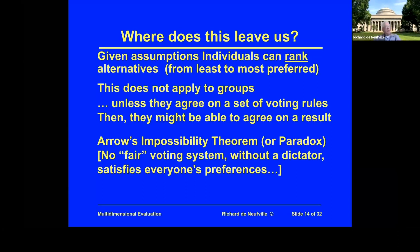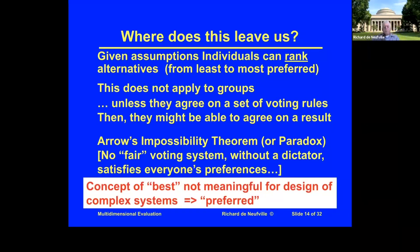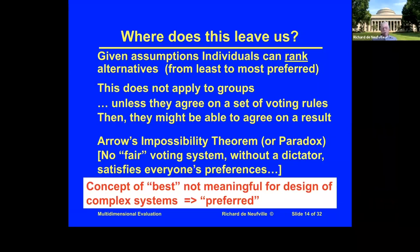You can agree to have a voting system which people will accept, but it will not satisfy everybody — as we regularly see in elections. So the concept of 'best' is not meaningful for the design of complex systems. We can agree to some process where you can identify a preferred solution, but from a mathematical optimization point of view, the idea that we can run a metric and have the optimal solution is only meaningful when we have a single objective function, or a combination where everything can be put on the same value scale, such as money. Otherwise, we are necessarily talking about a preferred solution.